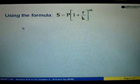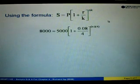We will use the formula S equals to P times 1 plus R over K to the power of nK. So substitute the accumulated amount which is given as 8,000. The principal is 5,000. Bracket 1 plus interest R equals to 0.08 over 4 to the power of n times 4.